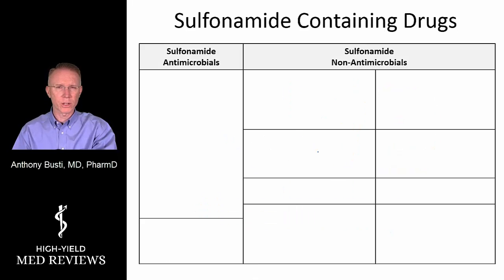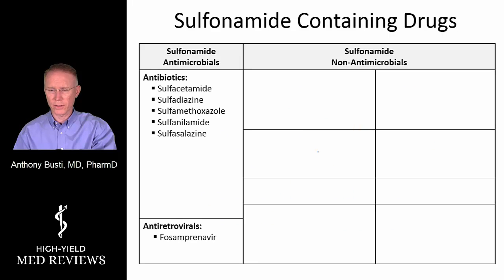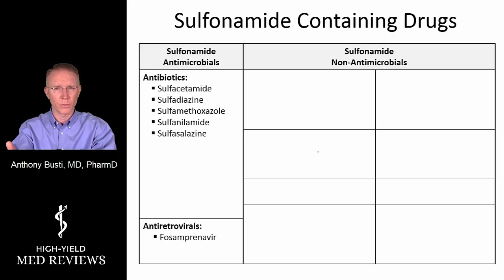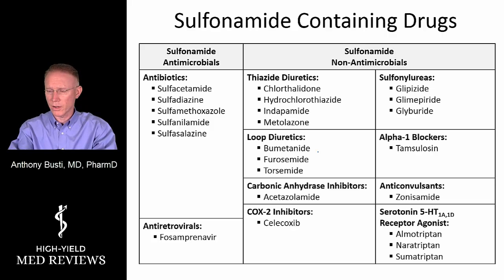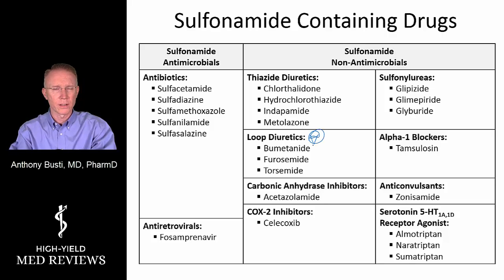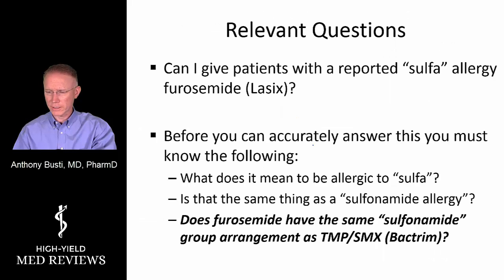When we look at sulfonamide-containing medications, we have sulfonamide-containing antibiotics — with Bactrim being the most common — and we also have many non-antimicrobial agents that contain sulfonamide moieties, of which loop diuretics are one group, and that is the point of this discussion.